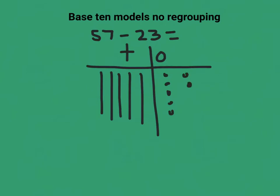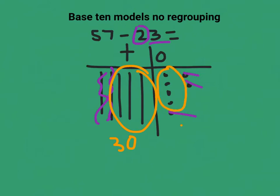Now what I want to do is get rid of two tens: 1, 2. So I've gotten rid of two tens. The next step is to get rid of three ones: 1, 2, 3. Now I take a look at what I have left over. I have three tens, that's 30, and I have four ones, that's 4. So the difference between 57 and 23 is 34.